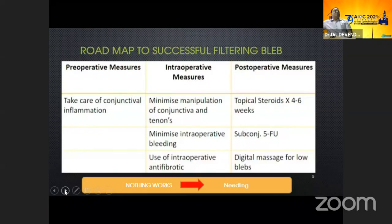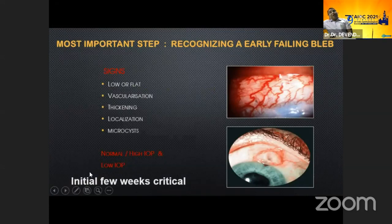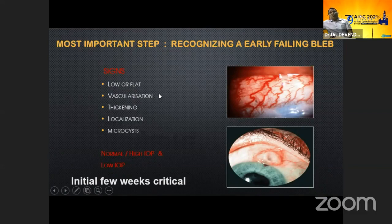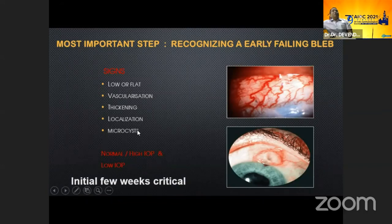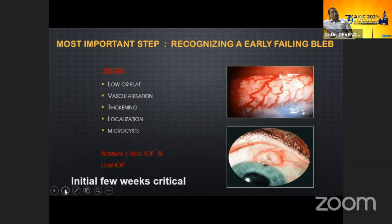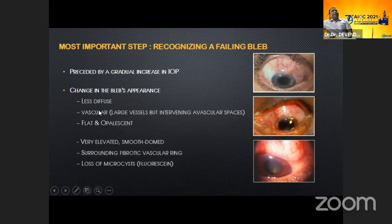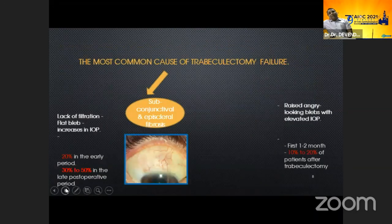What is a successful bleb? It is mildly elevated, diffuse, lacks vascularization, and has presence of microcysts, with appropriately controlled IOP. How to diagnose early bleb failure? Always look for the extent of the bleb — whether it is low or flat — and look for vascularization, whether mild or severe. Look for the presence of corkscrew vessels, which is a sign of initiation of bleb failure. Also look for thickening of the bleb and loss of microcysts. Initially IOP may be normal or low, but once bleb failure starts, IOP gradually rises and the bleb becomes encapsulated, fused, vascular, and flattened.